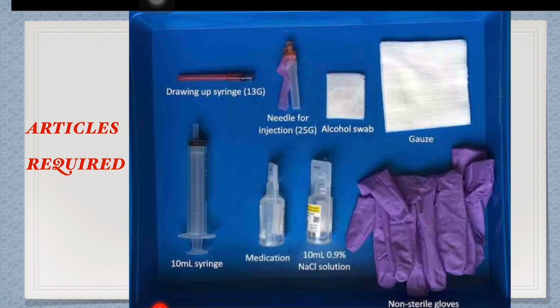Then the syringe — depending upon the volume of medication, we can select the size of syringe and drawing-up needle. The drawing-up needle is used to withdraw medication from ampoules, and the needle for injection is used for administering it. At the time of injection, change the drawing-up needle with the needle for injection. Then use an alcohol swab to wipe the area of injection to avoid spreading infection.